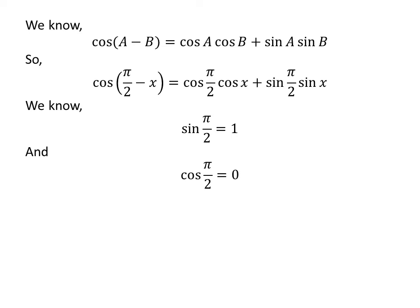We know the value of sine of half of pi is equal to 1 and cosine of half of pi is equal to 0.